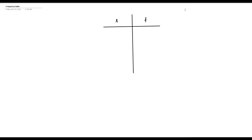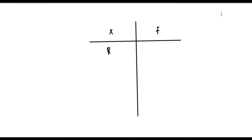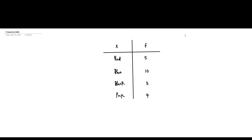So let's start with the categorical variable example. For example, I go into a classroom and ask the students to tell me their favorite color. Color in this case is a categorical variable because we can't attach a number to color. After interrogation, five students tell me they like red, ten students tell me they like blue, three students tell me they like black, and seven students tell me they like pink. So we now have a frequency table — a full color distribution for students in this class.